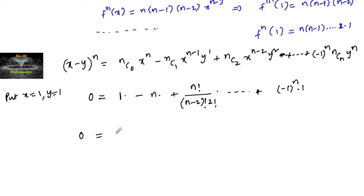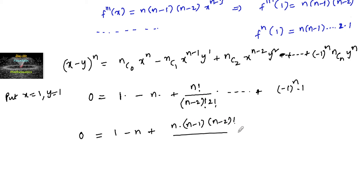Expanding C(n,2): n(n-1)(n-2)! divided by (n-2)!·2! — the (n-2)! terms cancel, leaving n(n-1)/2!, and so on for higher terms.